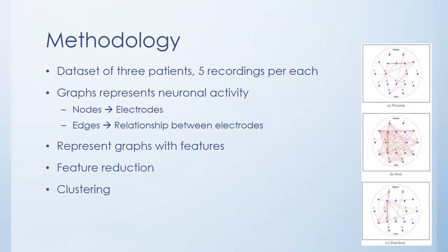Let me explain my methodology. I have a dataset consisting of 15 recordings in total, 5 recordings per each patient. I divide each recording into frames. One of the main purposes of my project is to find the optimal frame size. In the project, graphs represent neuronal activity in the brain, where the nodes represent electrodes and the edges represent relationships between electrodes.